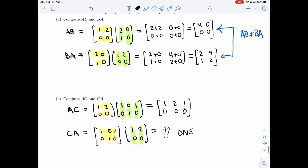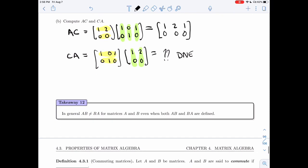In A, I don't have any clear relationship between AB and BA. And even worse, in B, one is defined and one isn't. And so this is going to be takeaway 12. In general, AB is different from BA for matrices A and B, even when both are defined. And it might be that one is defined and one isn't. It might be that both are not defined.